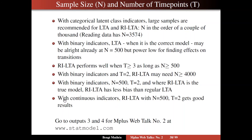With continuous indicators, the situation is quite different: with 500 observations and only two time points, RILTA gets good results. That's a first overview of advantages and practical considerations for using RILTA. Next, we'll go to some outputs and take a look at RILTA in practice on the reading data.